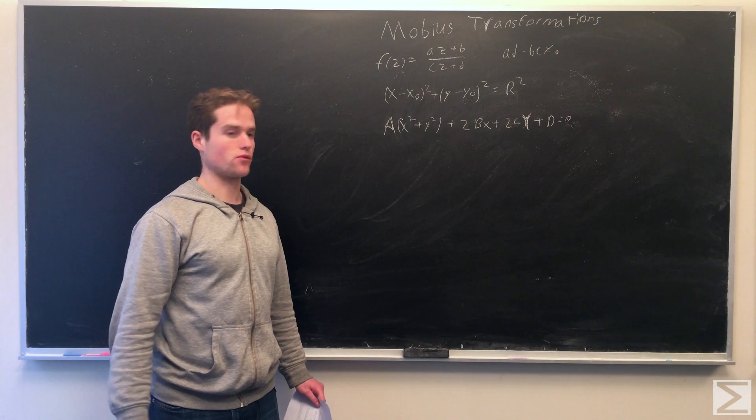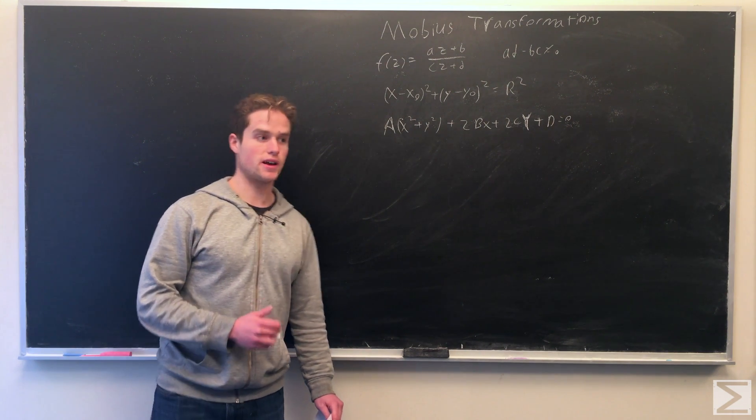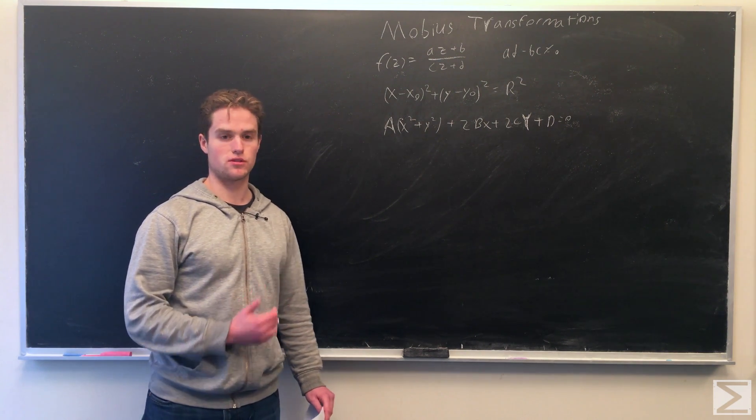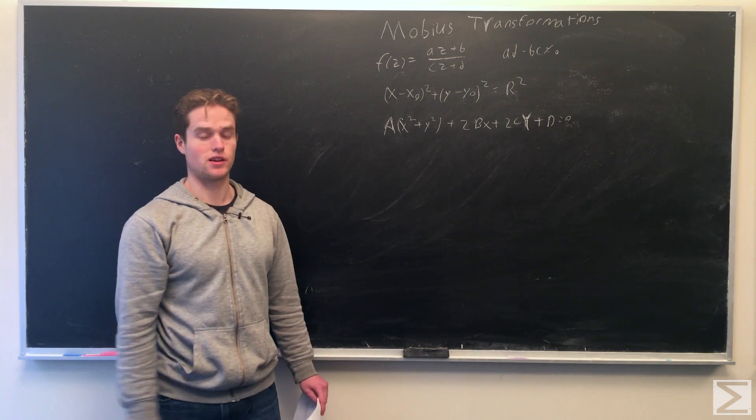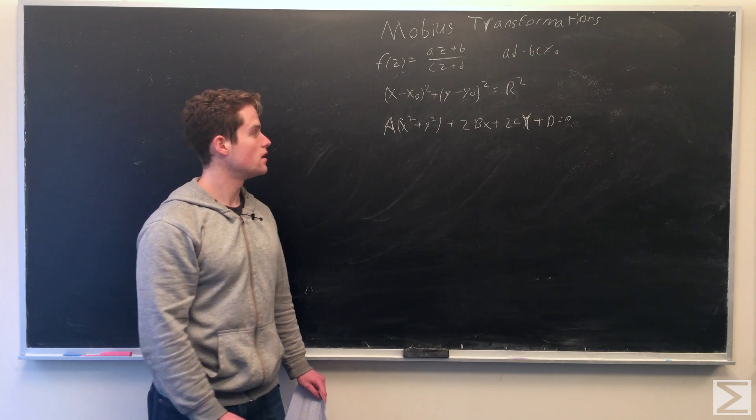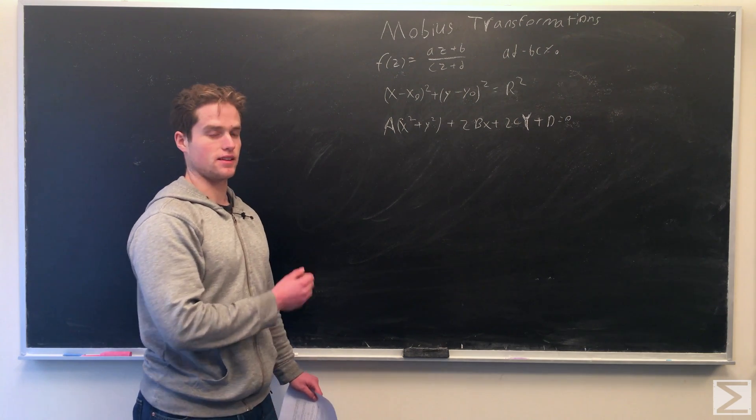So we're going to write this in a slightly different form of a x squared plus y squared plus 2bx plus 2cy plus d equals 0. So this form covers any circle we want and also any line we want by setting a equal to 0.